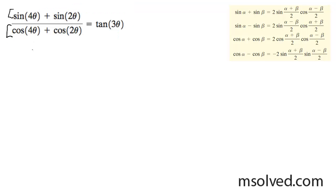So I'm going to start off with the numerator here. The numerator, it's sine plus sine, so I'm going to use the first equation in our bank of equations there. So this is going to be 2 sine of 4 theta plus 2 theta by 2 times cosine 4 theta minus 2 theta by 2.